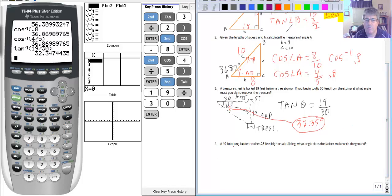And our final sample problem. A 40 foot long ladder reaches 28 feet high on a building. So going up 28 feet high on a building and we've got our ladder.